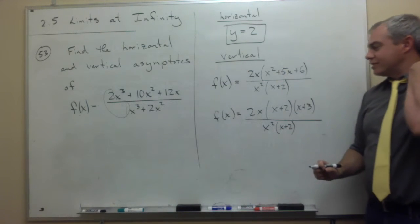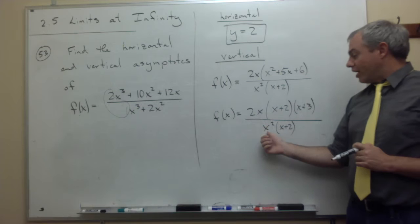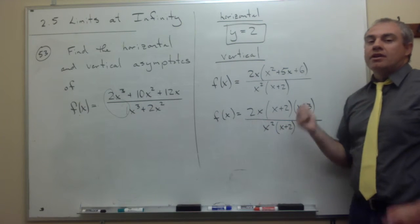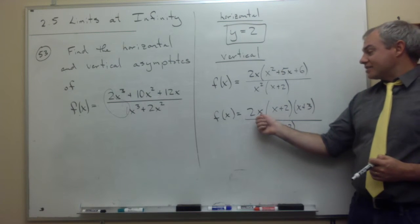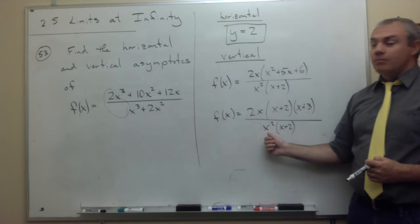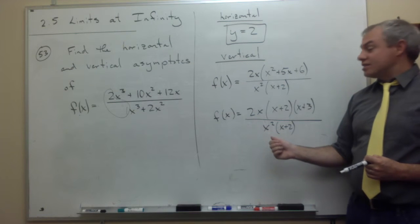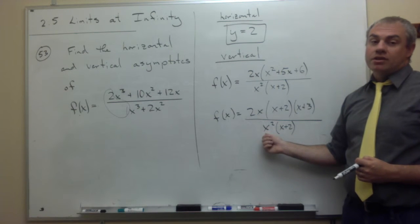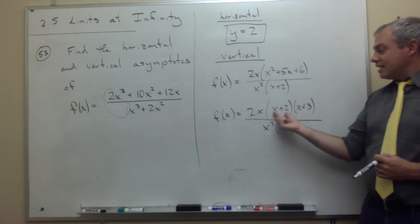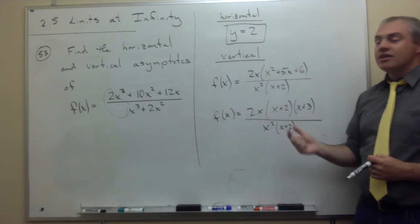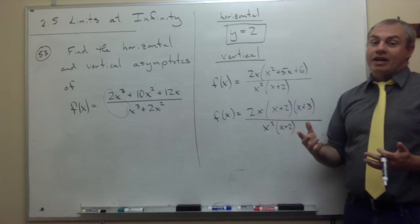So what are the factors on the bottom? I have an x, I have another x, and I have an x plus 2. Now the question is, are there things on top to cancel those out? Well, there is an x that cancels out one of these x's, but it cannot cancel out the other x. Over here, x plus 2 shows up, but there is an x plus 2 on the top to cancel it. So that means that at x equals negative 2, I have a hole in the graph, but I don't have an asymptote.